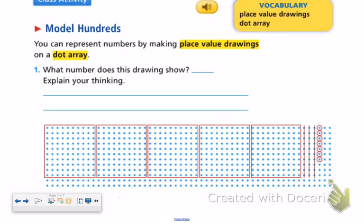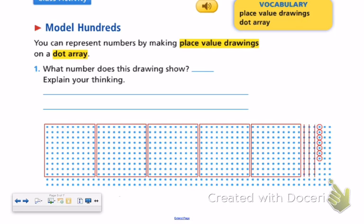As I look at the activities that we were doing in class, the first thing I want to point out is the vocabulary at the top. Obviously, place value drawings is a key vocabulary. What we're saying is instead of having just place value numbers and identifying those, the place value drawing